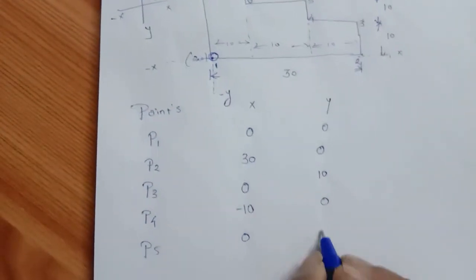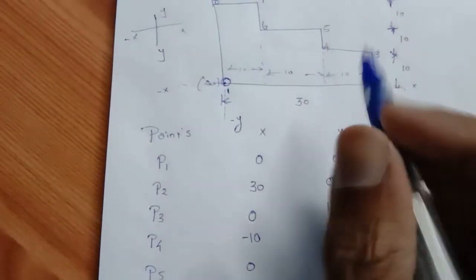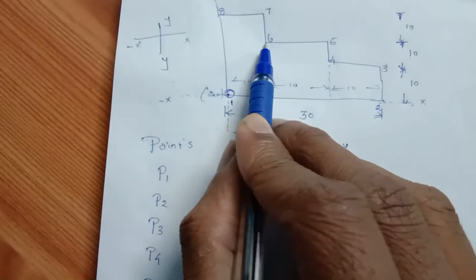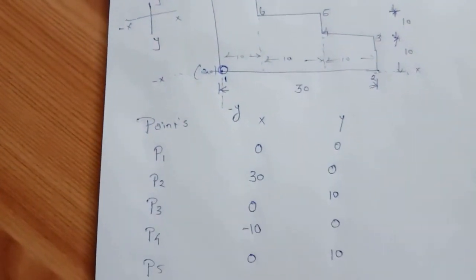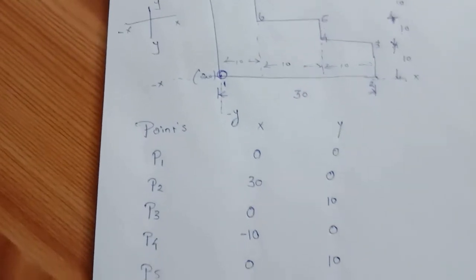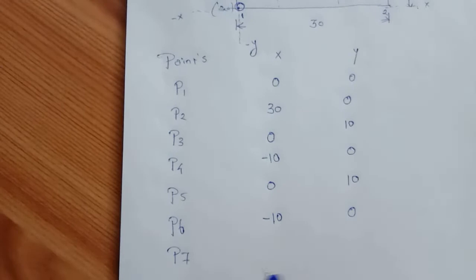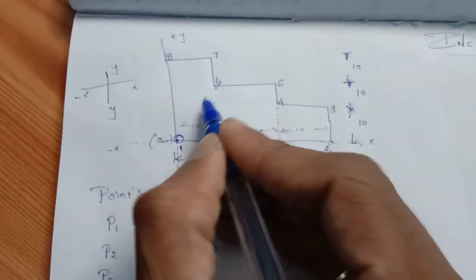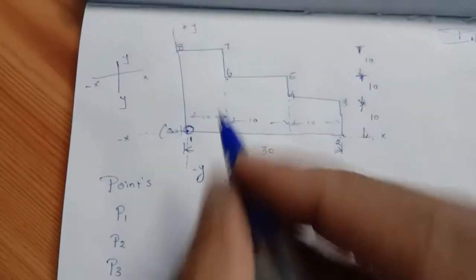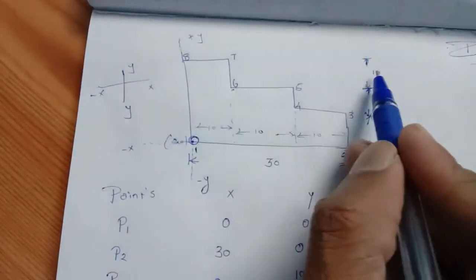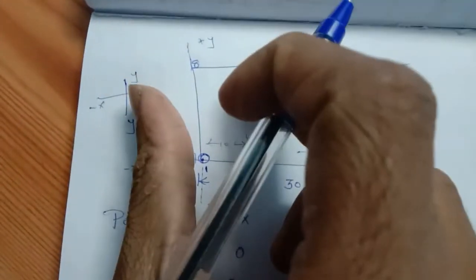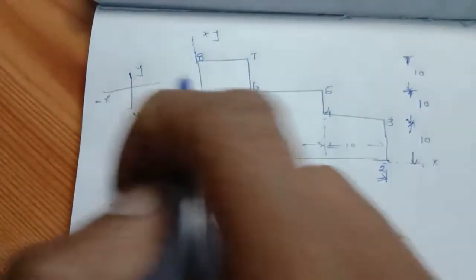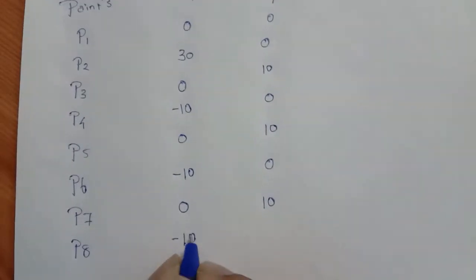X is less than X. Now the way here is P6. 5 to 6 — the length is 10. X is equal to 10. It is minus X direction and Y is equal to 0. This is P7. 6 to 7: X is equal to 0 and Y is equal to X direction, equal to 10 plus 10. P8: 7 to 8 — X direction will go minus X direction. P8: minus 10, Y is equal to 0.